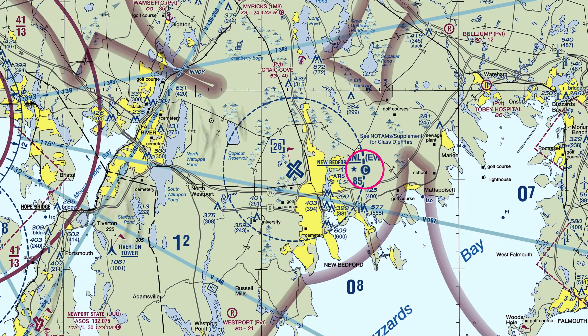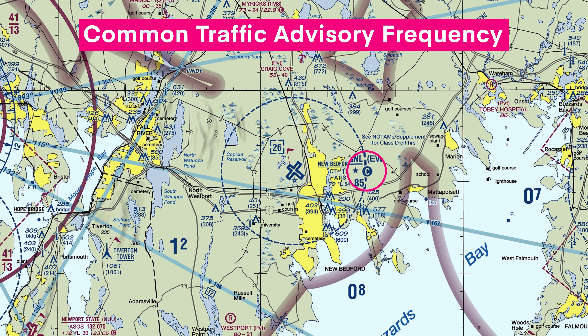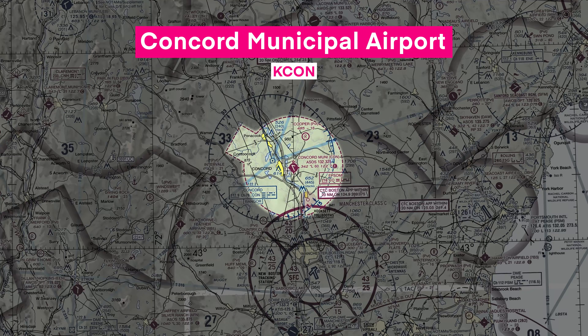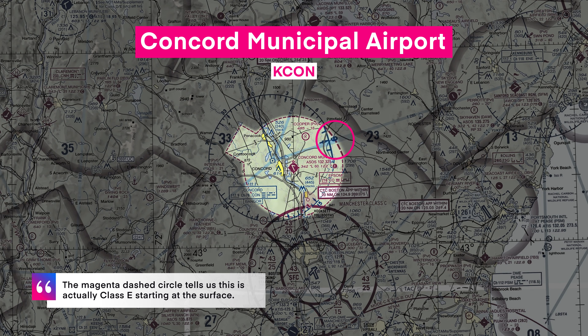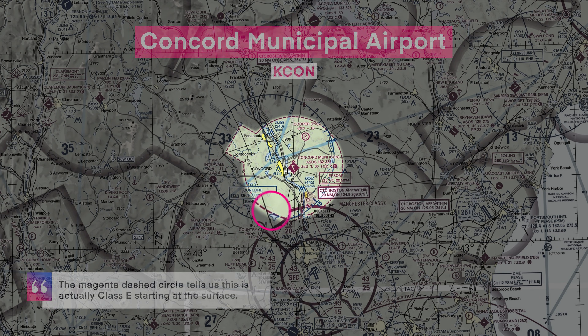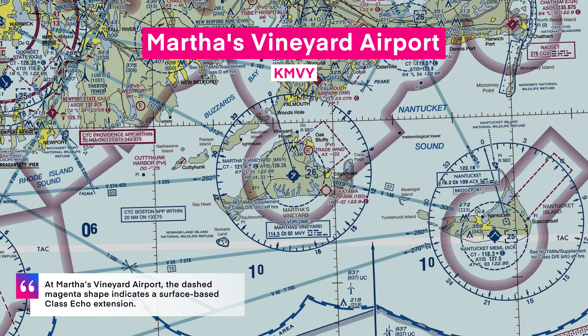This blue circle with a C in the middle means that when the tower is closed, this frequency becomes the Common Traffic Advisory Frequency, or CTAF. Pilots will use the CTAF to self-report their position. Now, take a look at Concord Municipal Airport. The magenta dashed circle tells us that it's actually Class E starting at the surface. But you'll sometimes see similar markings around Delta airspace. For example, at Martha's Vineyard Airport, the dashed magenta shape indicates a Class Echo extension that starts at the surface.